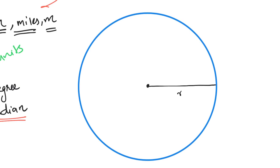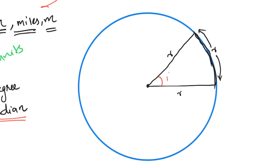That circle has a center and radius R. I'll show this circle with an arc. This arc has a length equal to R — the length of the radius. I will show you the radius straight and curved. This is the radius R. This angle is 1 radian.